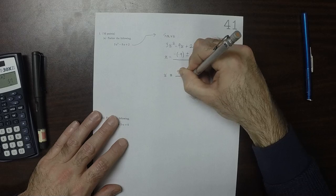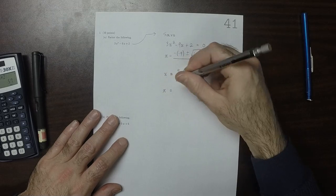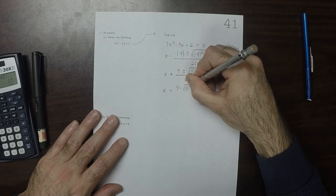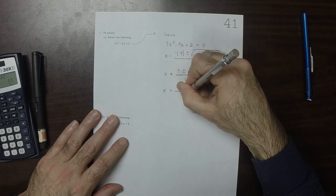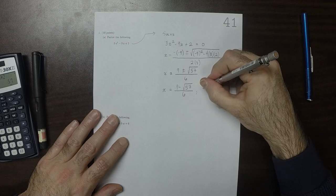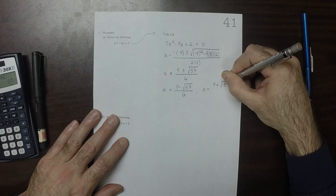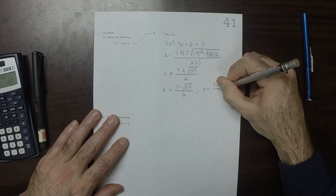So the two solutions are 9 minus square root 57 divided by 6, and 9 plus square root 57 divided by 6.